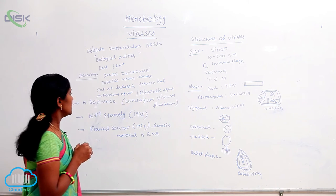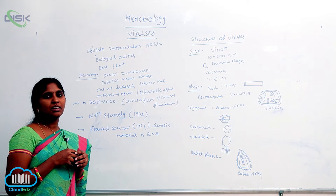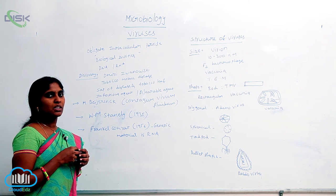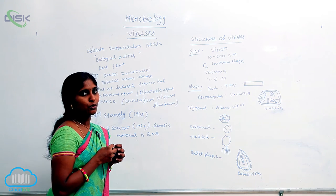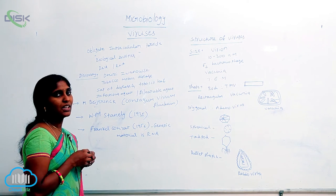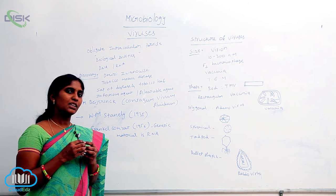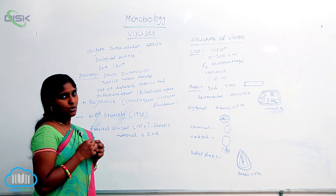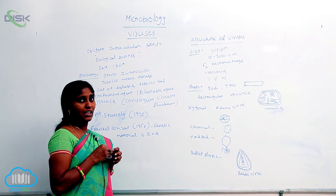In the 18th century, Dmitri Ivanovsky conducted experiments. He studied the disease tobacco mosaic virus (TMV), which is a disease of tobacco. While studying tobacco mosaic virus, he collected diseased tobacco leaves, extracted the sap from the diseased material, and used it to infect healthy plants.